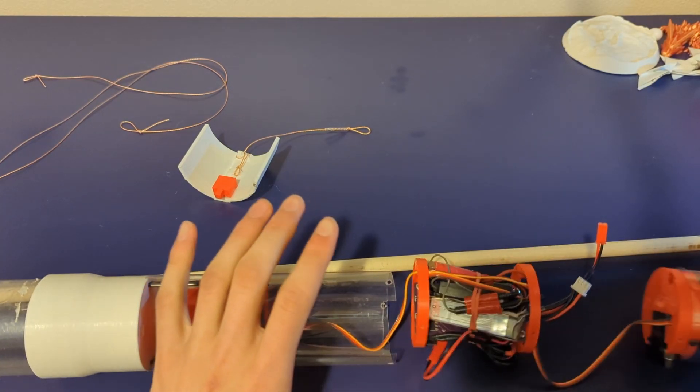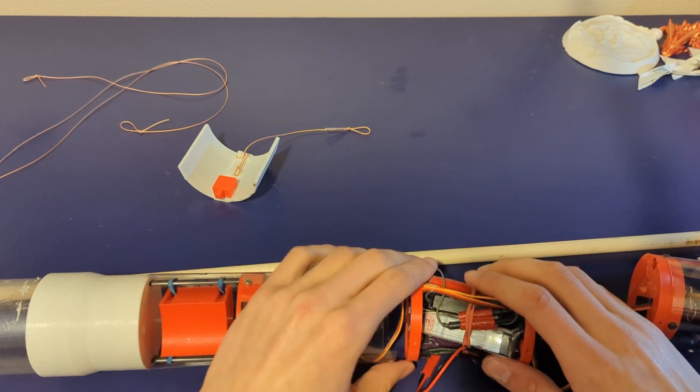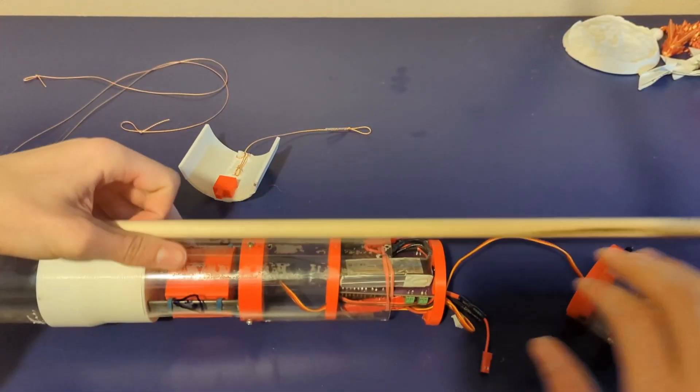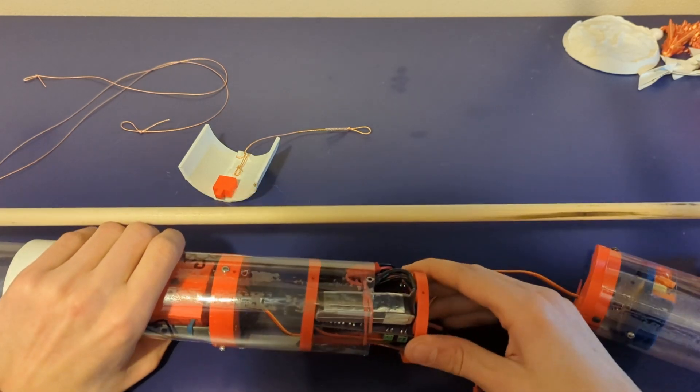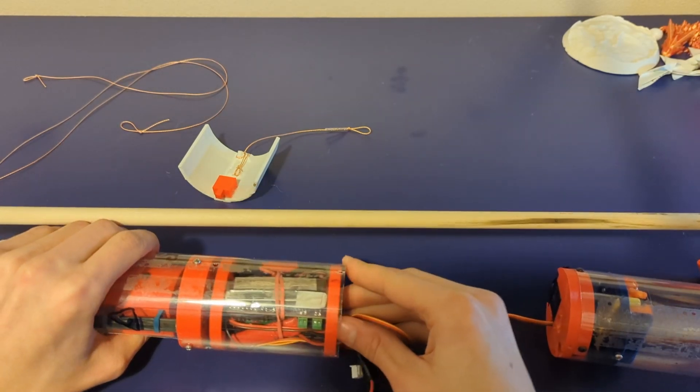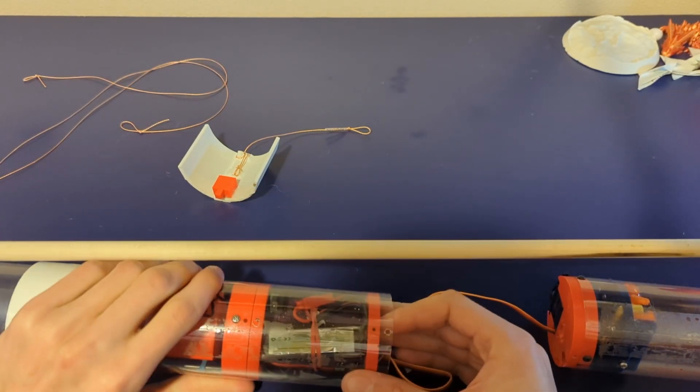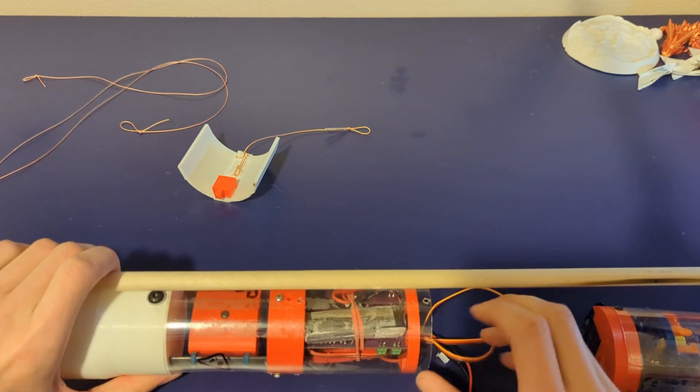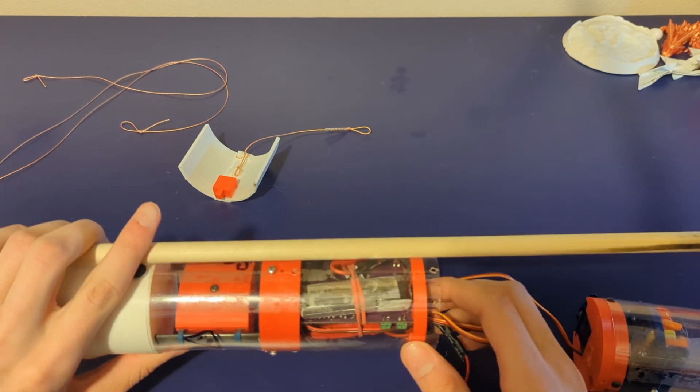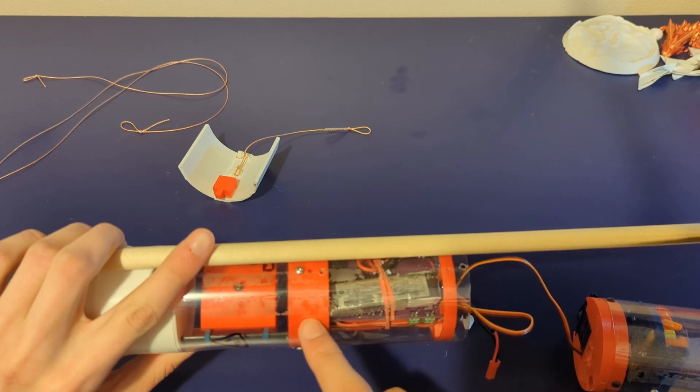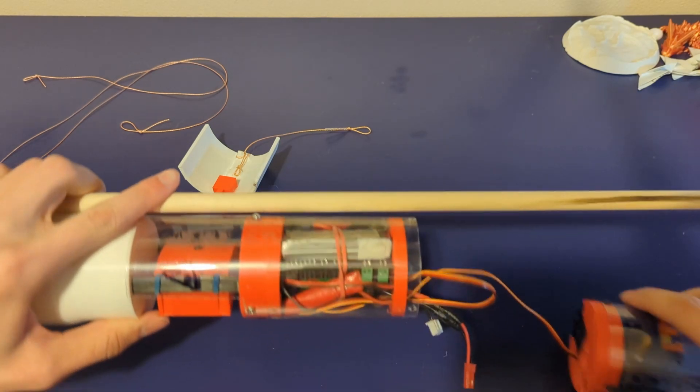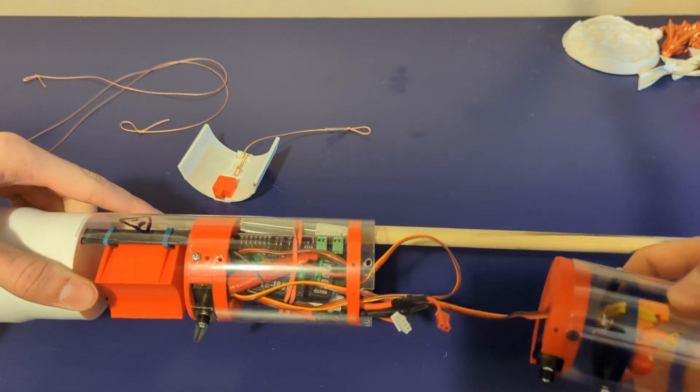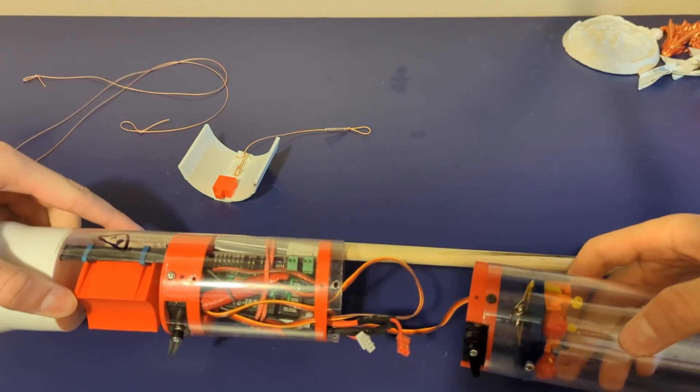Now everything's plugged in, we can try to slide this whole package into the tube and get everything to fit. All right, got that slid in there, had to rearrange some wires a bit, but you can see it sits nice and flush at the bottom here, and all of the electronics are in there. And once we tuck some of these wires in, this nose cone payload section will be able to fit nicely on top.